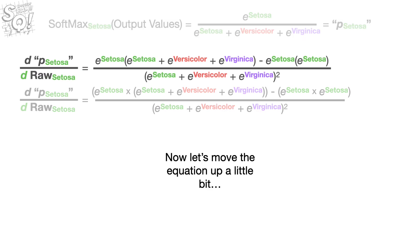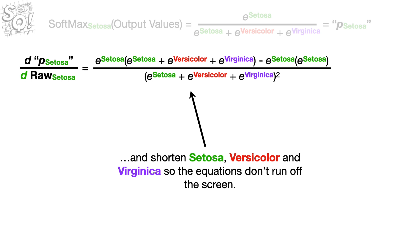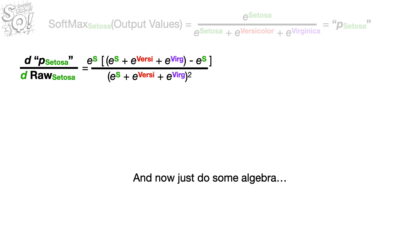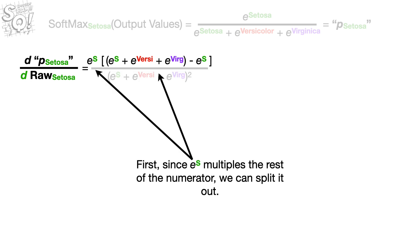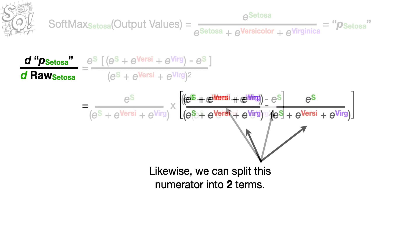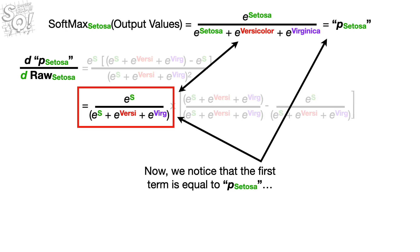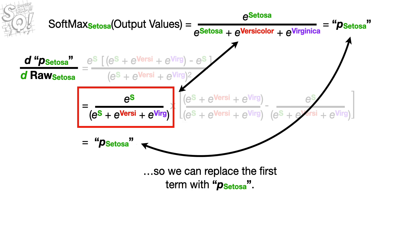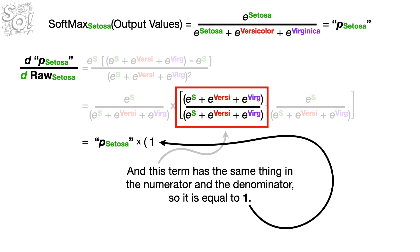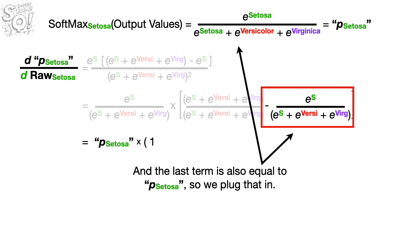Now let's move the equation up and shorten Setosa, Versicolor, and Virginica so the equations don't run off the screen, and just do some algebra. Since E to the S multiplies the rest of the numerator, we can split it out. Likewise, we can split this numerator into two terms. We notice that the first term is equal to the predicted probability for Setosa, so we replace it with that. This term has the same thing in the numerator and denominator, so it equals 1. And the last term is also equal to the predicted probability for Setosa, so we plug that in.